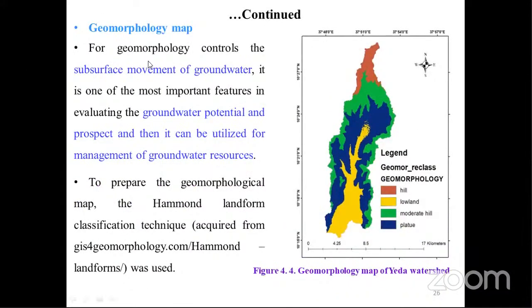The other important factor is the geomorphology map. Geomorphological control of subsurface movement of groundwater is one of the most important features in evaluating groundwater potential and prospects, and it can be applied for management of groundwater resources. To prepare the geomorphology map, the Hammond landform classification acquired from geomorphology.com was used, as shown in the map. The geomorphology classification includes: hill, lowland, moderate hill, and plateau.